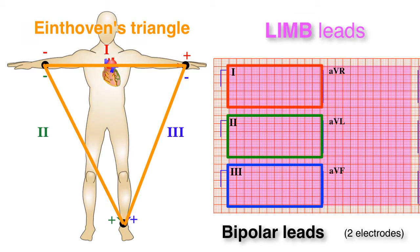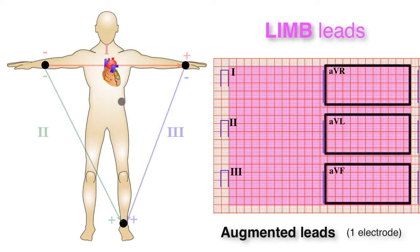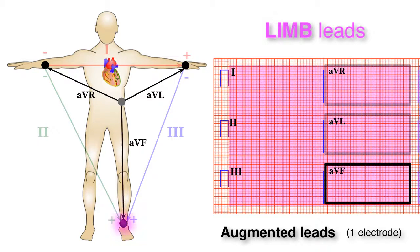Then, to complete the limb leads, there are three augmented limb leads. Lead AVR represents the vector pointing towards the right shoulder. Lead AVL represents the vector pointing towards the left shoulder. And lead AVF represents the vector pointing towards the feet.